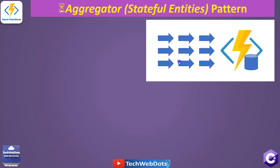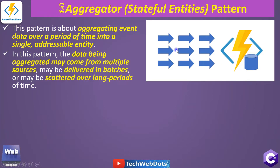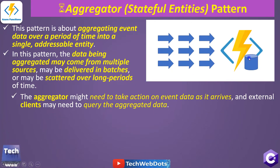We are talking about the Aggregator pattern — when multiple requests we want to manage on the entity side, or stateful entity side, we should use stateful entities. By definition, what Microsoft says: this pattern is about aggregating event data over a period of time into a single addressable entity. Addressable entity means we can perform some query, we can get the data, and we can set the data of this event.